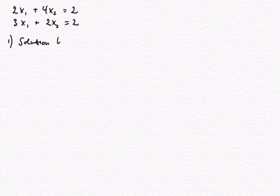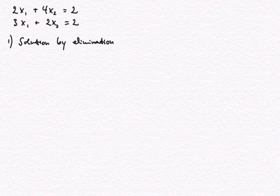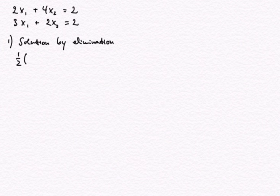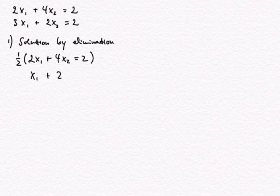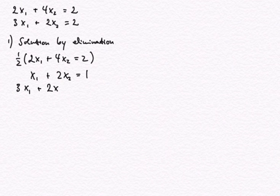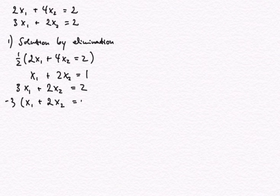The first method is solution by elimination, where we multiply the equations with numbers so as to bring the coefficients on one of the two variables to align, and then we can subtract from each other and thereby eliminate the corresponding variable. For example, we could do this by multiplying the first equation by one half, giving us x1 plus 2x2 equals 1.